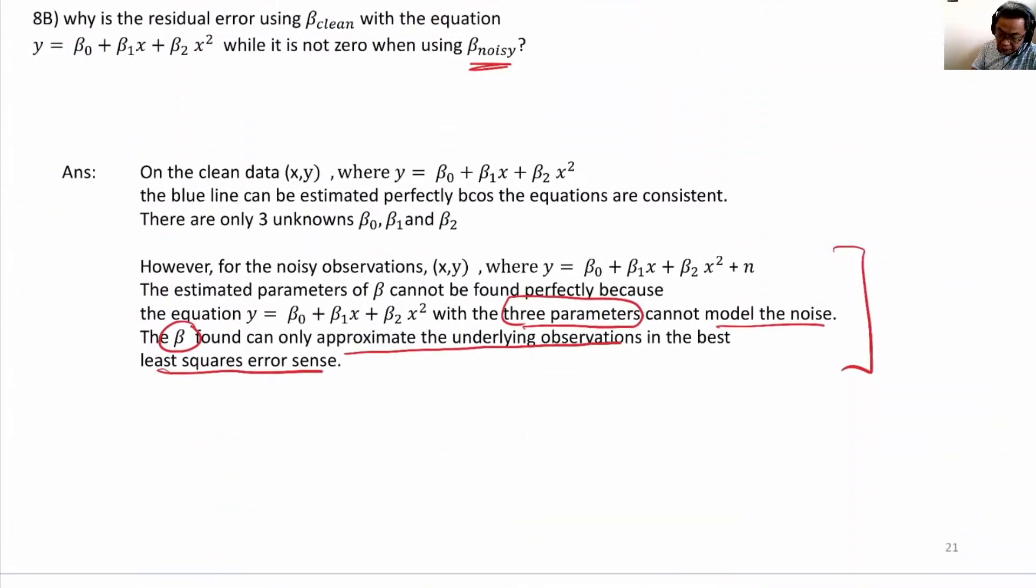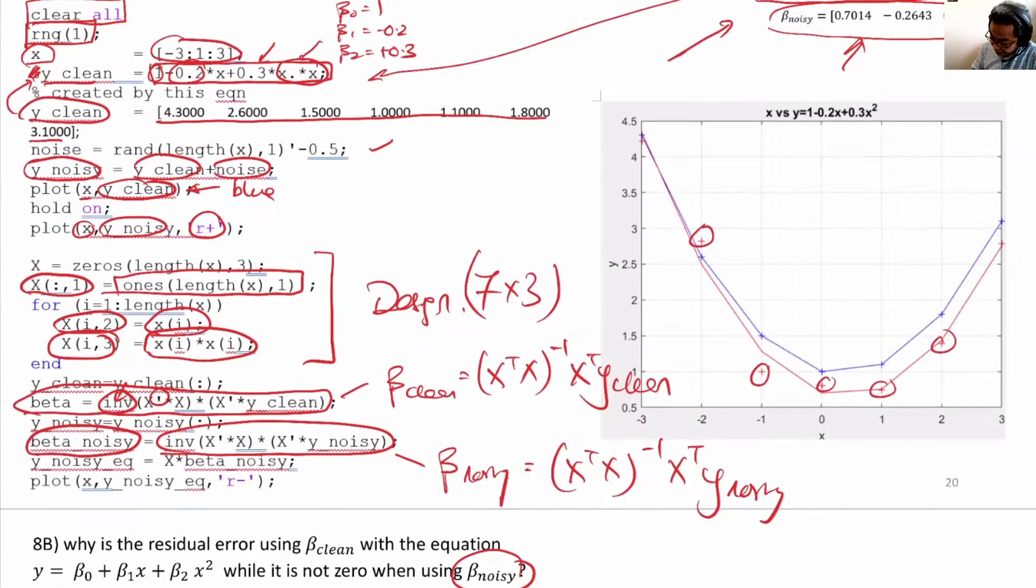Now in the second part of the question, it asks us why is β_noisy not the same as β_clean, and also why the red curve doesn't pass exactly across all the red crosses.